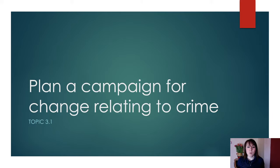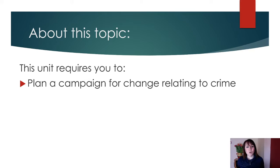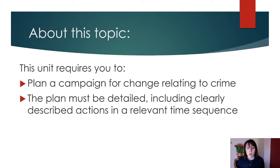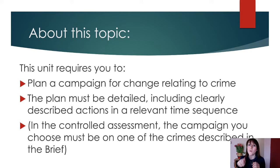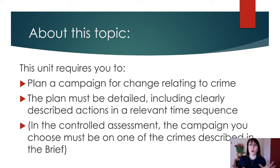Planning a campaign for change, 3.1. This unit requires you to plan a campaign for change related to a crime. The plan must be detailed, including clearly described actions in a relevant time sequence. In the controlled assessment, the campaign you choose must be one of the crimes described in the brief — that short story you receive in your exam. The brief will describe a number of different crimes and you have to pick one of those crimes. The crimes are what you learned in Unit 1, 1.1 — things like genocide or white collar crime.